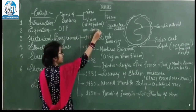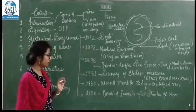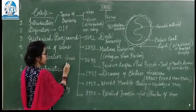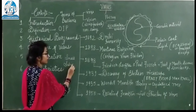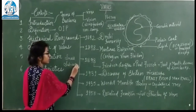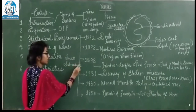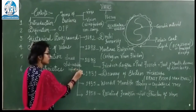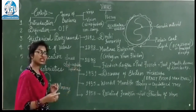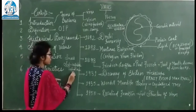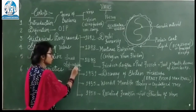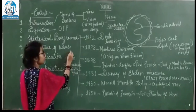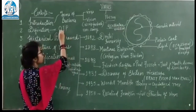Viruses के chief characteristics देखें तो — viruses को कहा जाता है sub-cellular infectious agent. Sub-cellular का मतलब क्या होगा? कि cell के अंदर infectious agent की तरह वो काम करेगा. Viruses की one word definition है OIP.